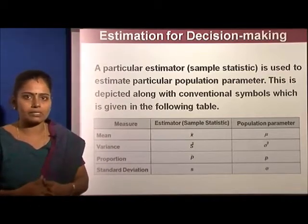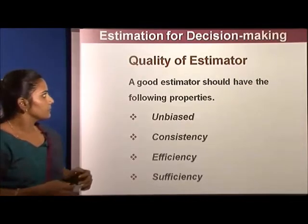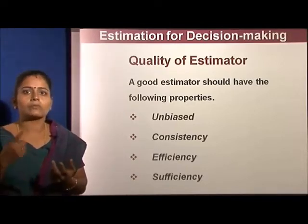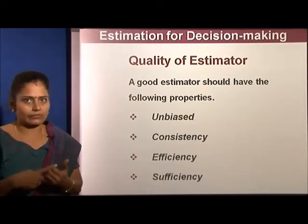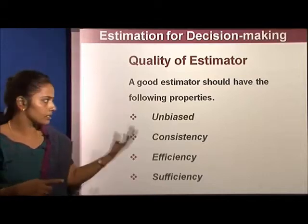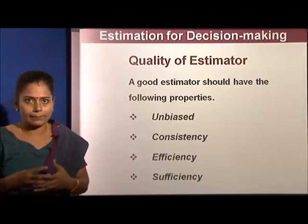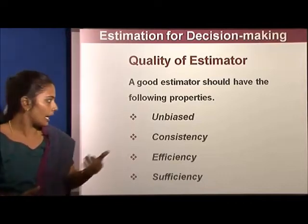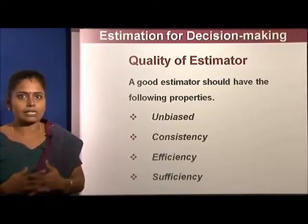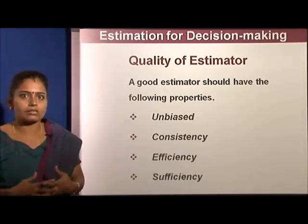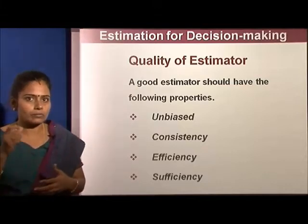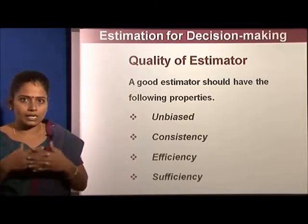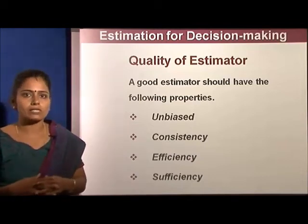What are the qualities of a good estimator? An estimator should be unbiased — it should not mislead us about how the population behaves. It should be consistent — we can repeatedly use it to give projections year after year. It should be efficient — self-explanatory and reliable. And it should be sufficient — not inadequate, but well-representative of the whole population. These are the four important qualities of an estimator.